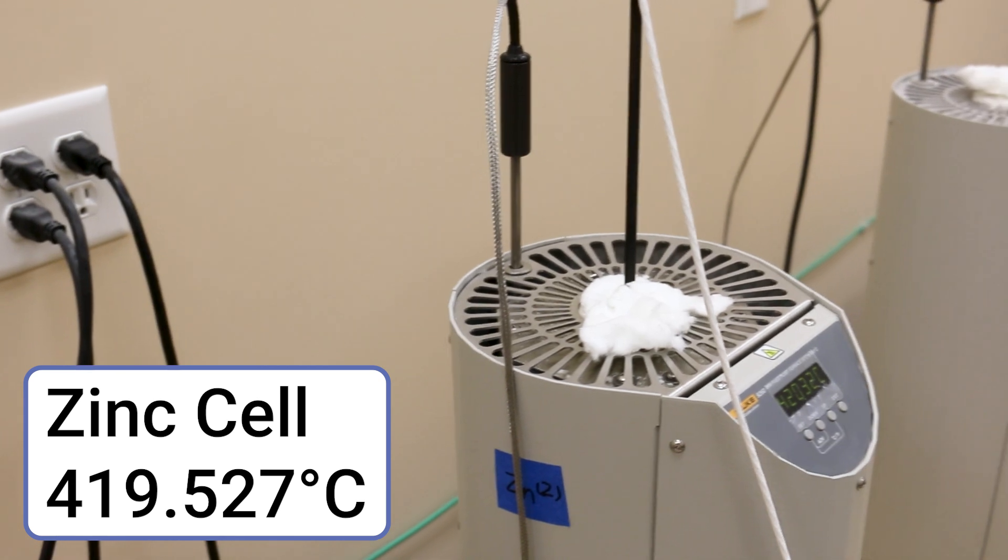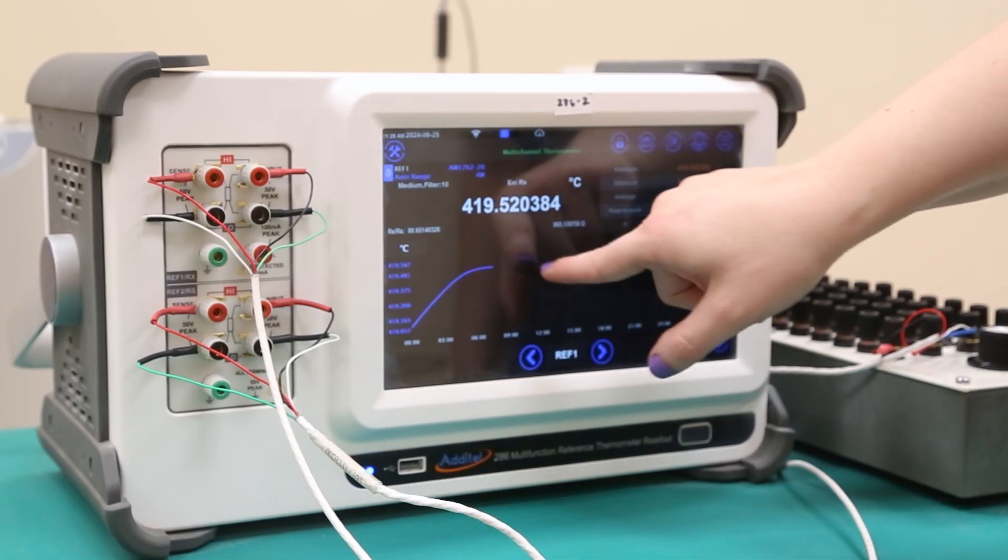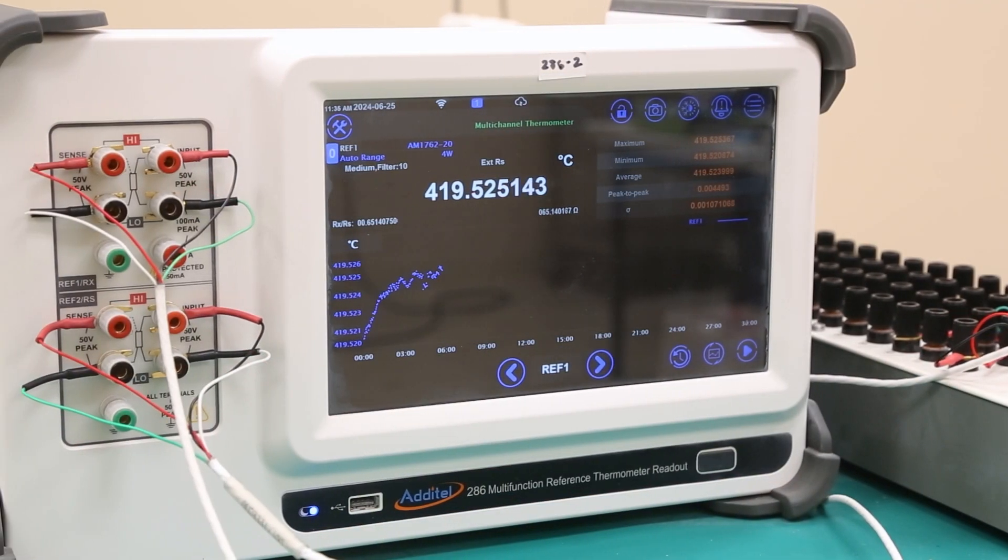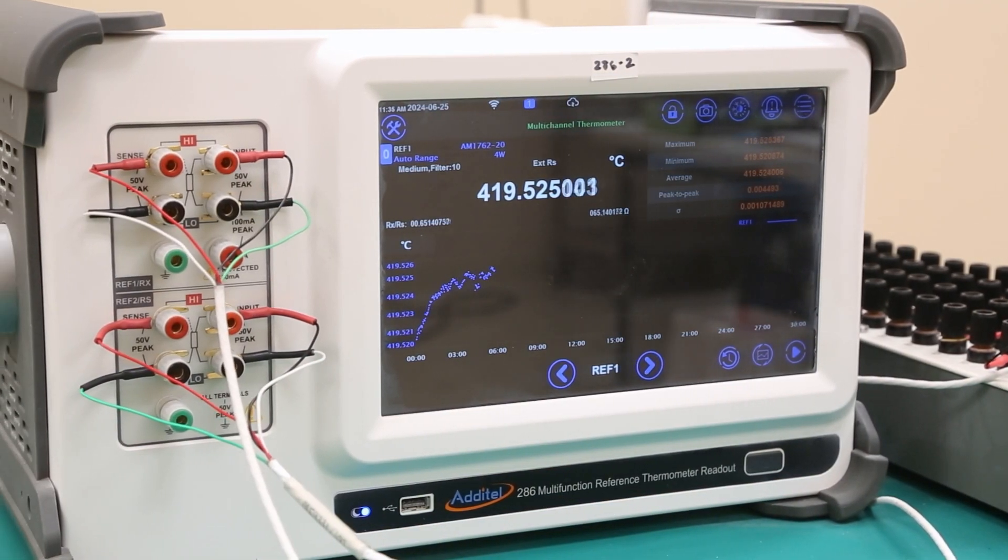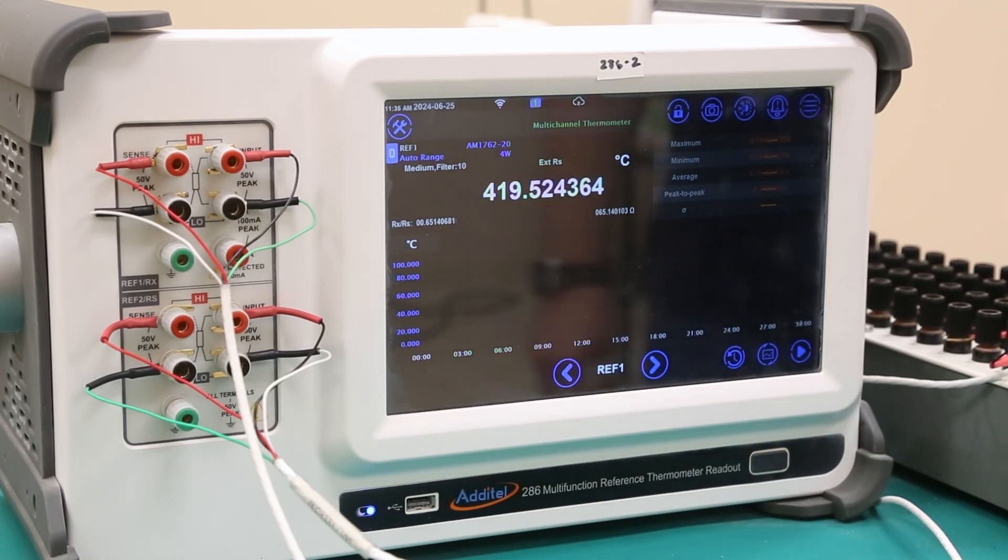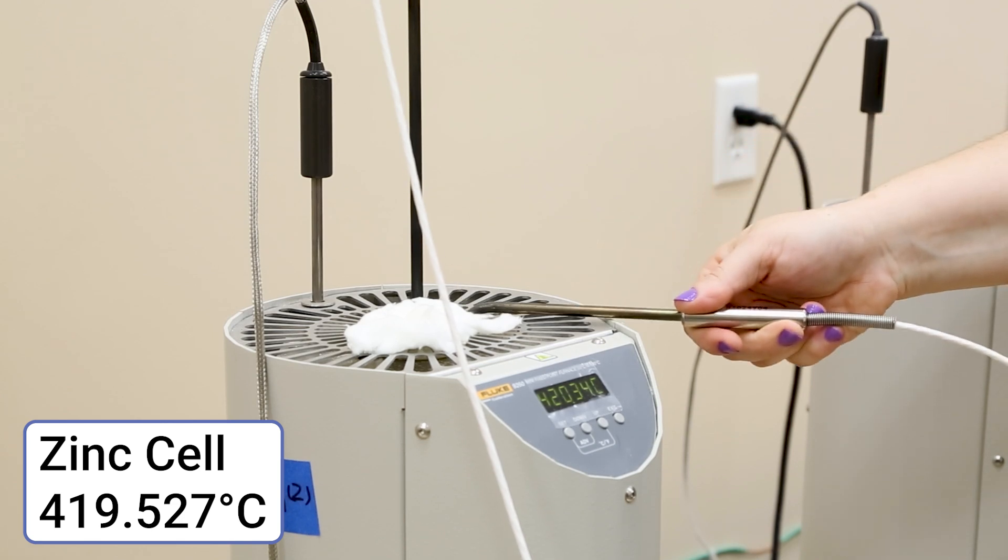You should also connect the reference thermometer to the REF1 wire. Now insert the reference probe, also called the check standard, into the zinc cell. Every few minutes, we will reset the thermometer statistics to resize the y-axis on the screen. This will help us identify when the temperature has plateaued enough for calibration, as shown by the temperature graph leveling off horizontally over time. At this time, you should also insert the first DUT probe in the preheat well of the furnace.